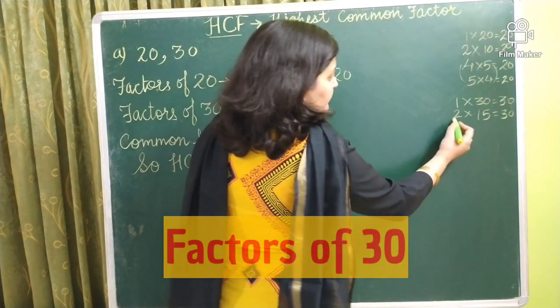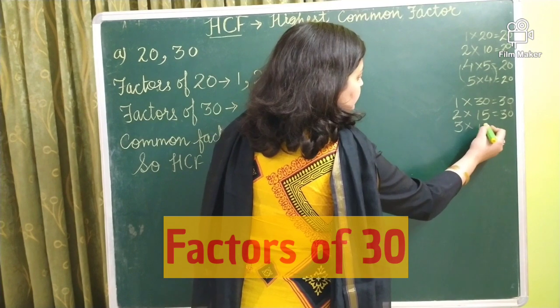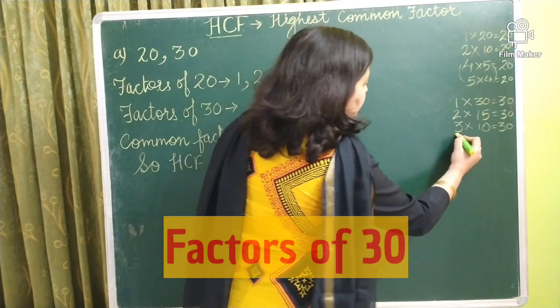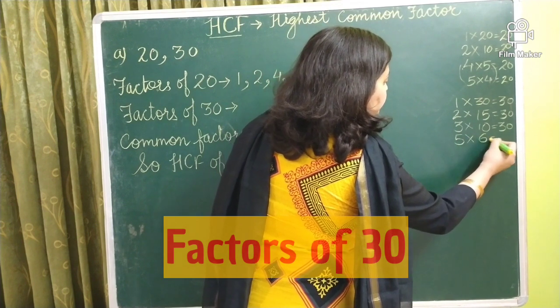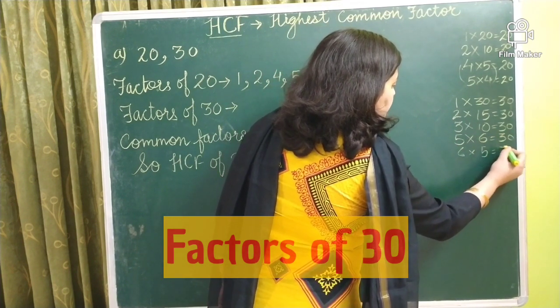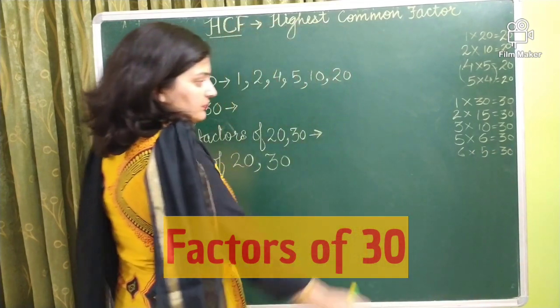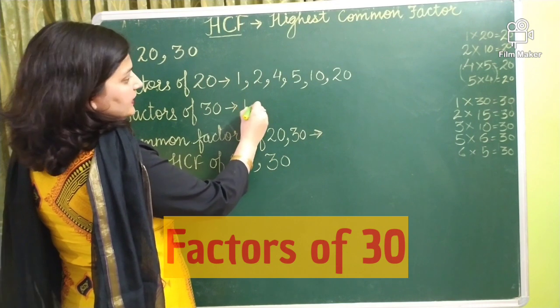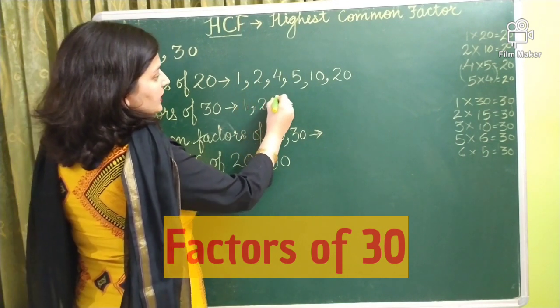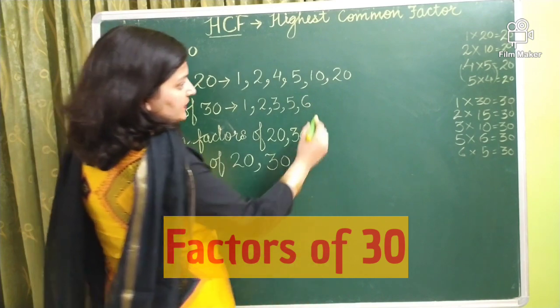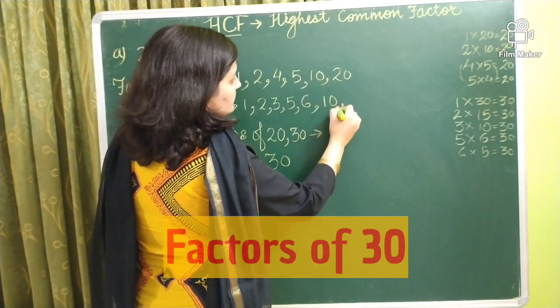Next. 3 tens are 30. Now check it for 4, 5. 5, 6 are 30. 6 fives are 30. So numbers are interchanging here. So the common factor of 30 are 1, 2, 3, 5, 6, 10, 15.